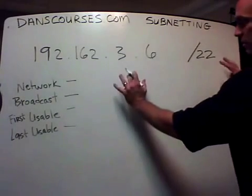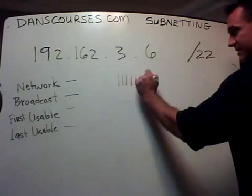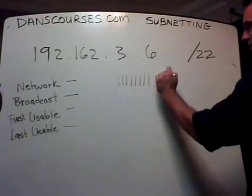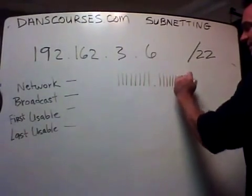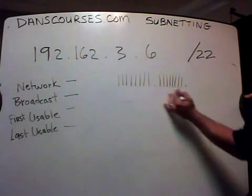First of all, let's deal with our subnet mask. Slash 22. One, two, three, four, five, six, seven, eight. One, two, three, four, five, six, seven, eight. Two octets, right? Then that's sixteen ones.